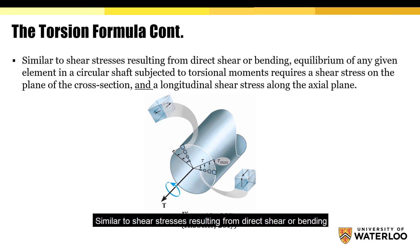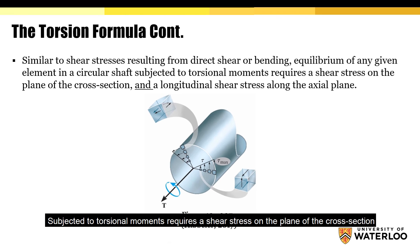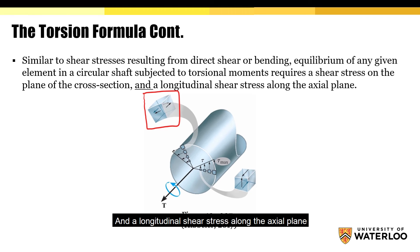Similar to shear stresses resulting from direct shear or bending, equilibrium of any given element in a circular shaft subjected to torsional moments requires a shear stress on the plane of the cross-section and a longitudinal shear stress along the axial plane.